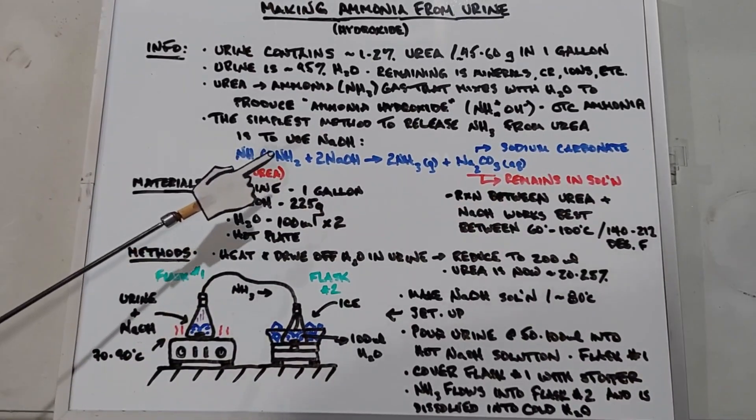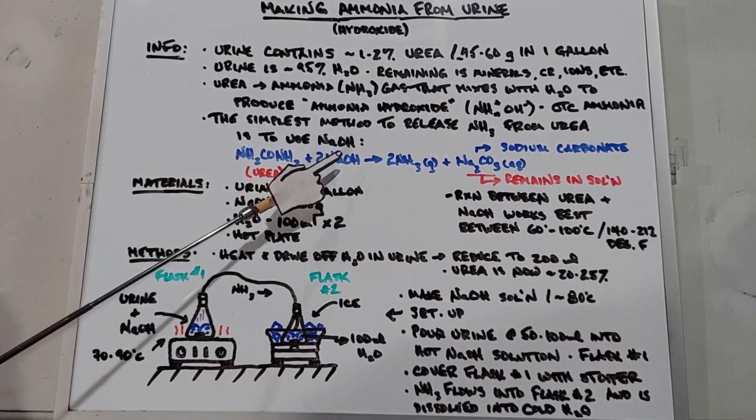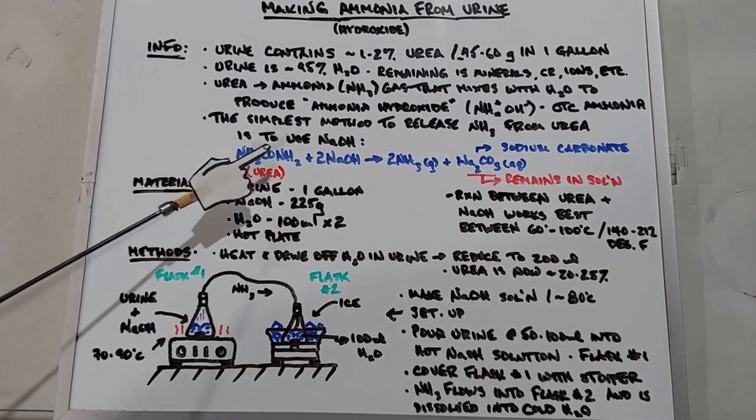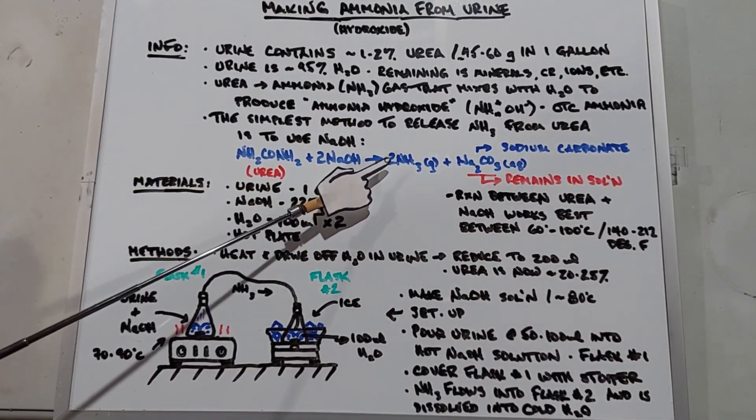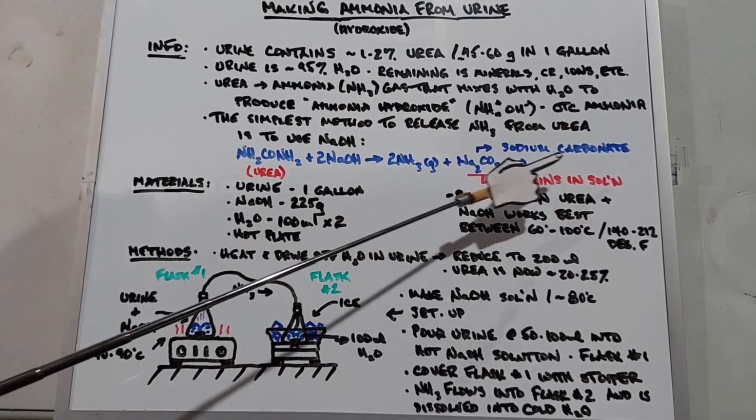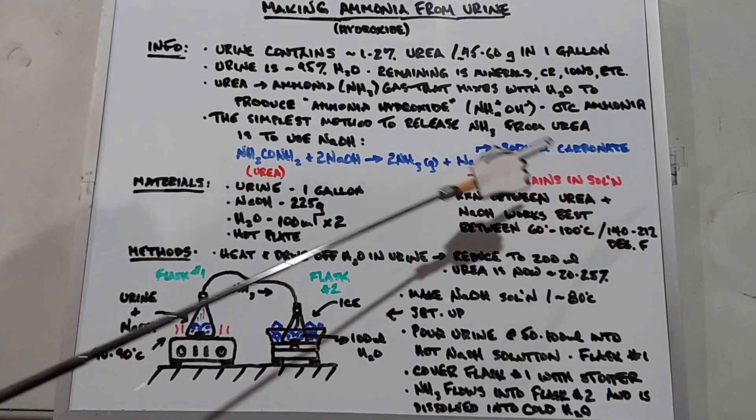This remains behind in the solution. So essentially when you're mixing your urine and sodium hydroxide with the urea in the urine, you're producing the ammonia gas which is getting released, and the sodium carbonate that's produced is soluble still in water so it remains back in the primary solution.